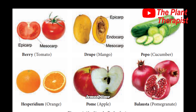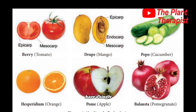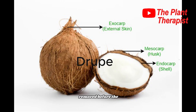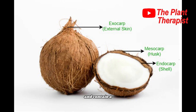Examples of hesperidium are oranges, lemon, lime, grapefruit, tangerine, etc. The second type of fleshy fruit is the drupe. A drupe is a simple fleshy fruit with a single seed enclosed by a hard stony endocarp or pit. In drupe, the mesocarp is not always obviously fleshy. In coconut, the husk — made up of the mesocarp and the exocarp, usually removed before the fruit is sold — is very fibrous. The seed of the coconut is hollow and contains a watery endosperm commonly called coconut milk.